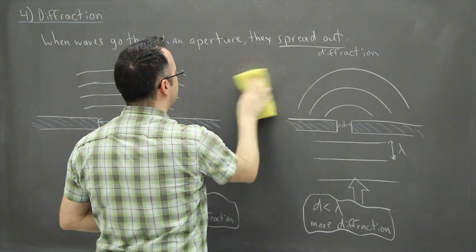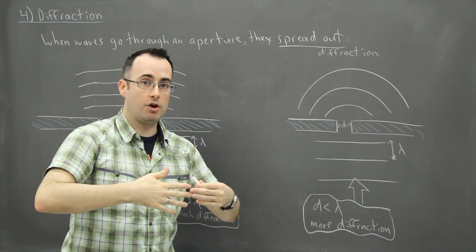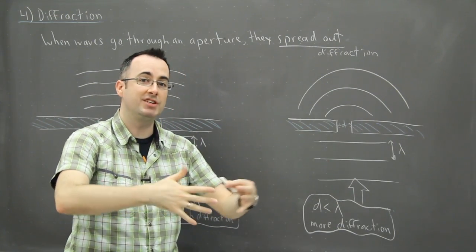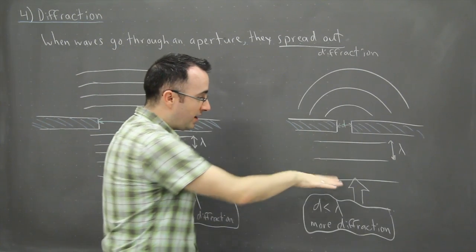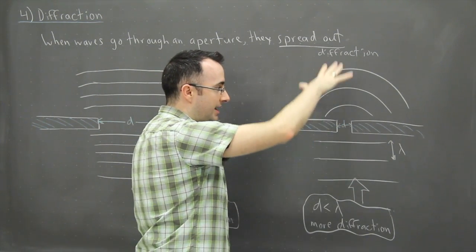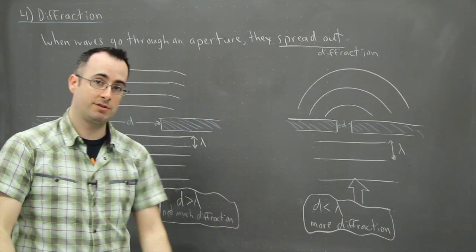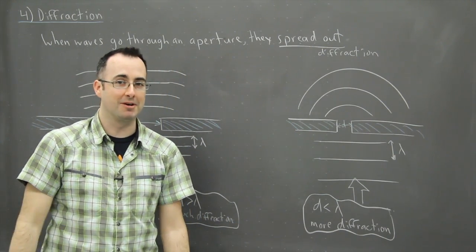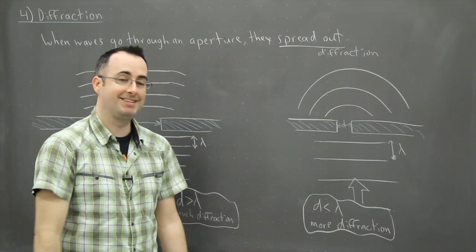Sound waves can also diffract when they go through an opening — the sound can spread out. Light does the same thing: wave fronts of light can go through an aperture and spread. So diffraction happens in all sorts of situations, not just when you're swimming and bothering your poor wife, but this works for any type of wave.